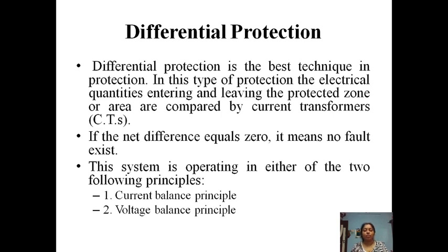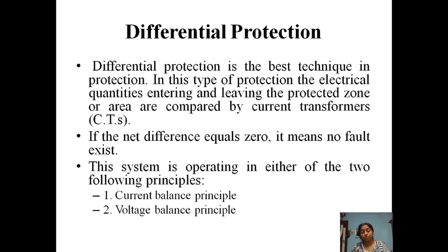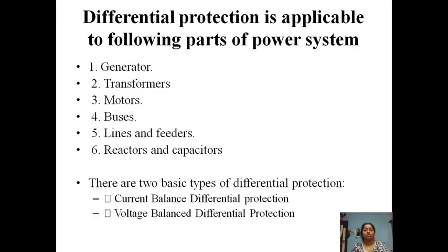This system operates on either of two principles: the current balance principle or the voltage balance principle. In the current balance principle, if the difference of current is zero, the relay will not operate; if a certain value of differential current exists, the relay will operate. In the voltage balance principle, the secondary voltages of the two CTs are compared — if they are equal, the relay will not operate; if unequal, a potential difference drives current through the relay, causing it to operate.